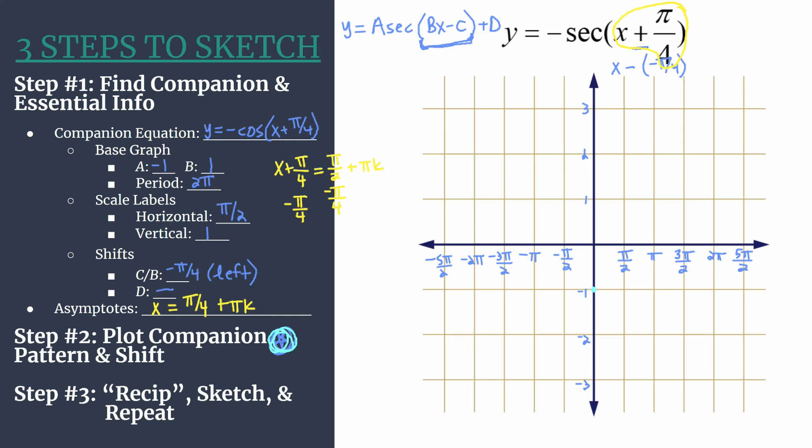Move over to the first horizontal tick mark to the right. Remember, we designed the scale intentionally so each of the first companion pattern points would align nicely. This will be an x-intercept. Move to the next horizontal tick mark to the right, so pi. This will be our maximum. And you get its y-coordinate by taking the opposite value of a, so 1. And then our final point, another x-intercept. That happens at our third horizontal tick mark to the right, 3 pi over 2.